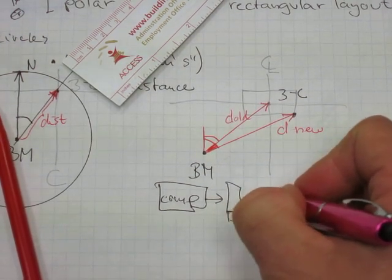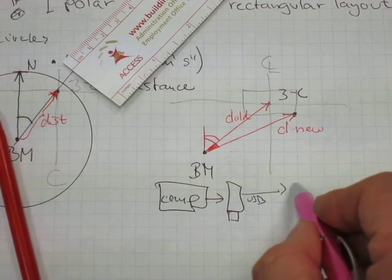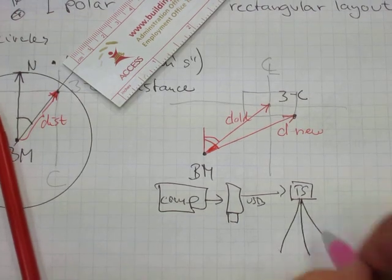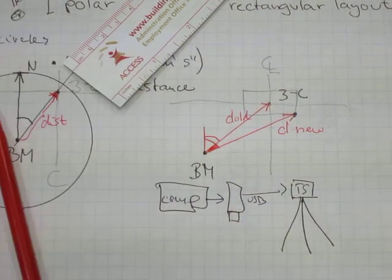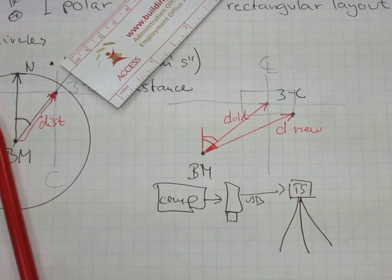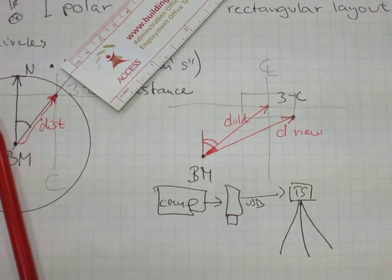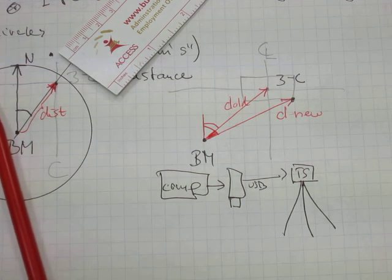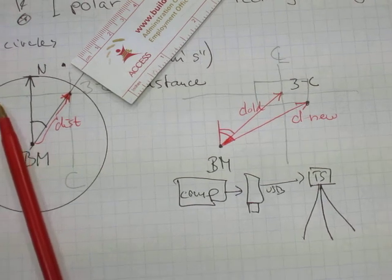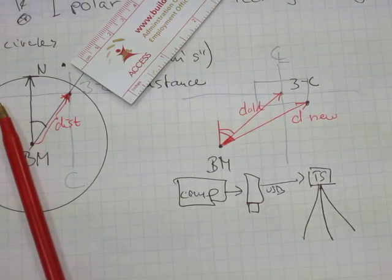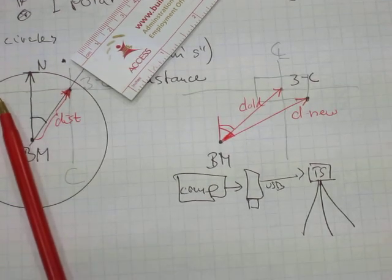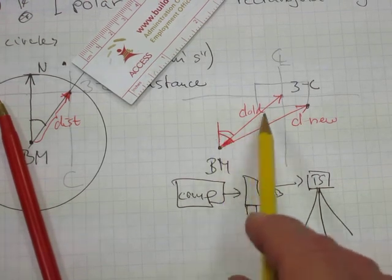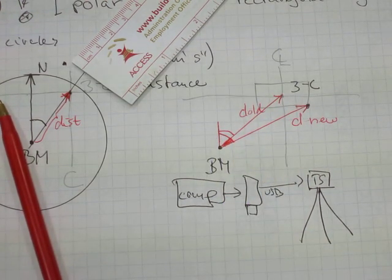That USB stick gets plugged into their total station — here is the tripod for it — and the total station reads the data. When the surveyor is out in the field, they cannot, do not, and will not change their bearings and distances because they don't have a computer tied to their backs. So they're not going to give builders new bearings and new distances — they can't just figure it out by eyeballing it.